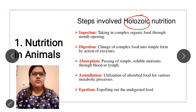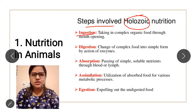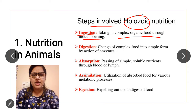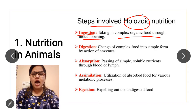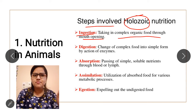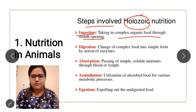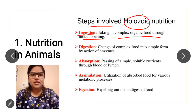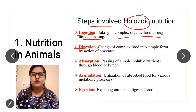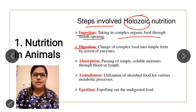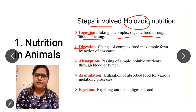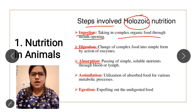The various steps involved in nutrition: first is ingestion — taking in complex organic food through the mouth opening. In the case of amoeba, the mouth is not involved, but in human beings food is taken through the mouth. After taking in food, it is digested into simple form with the help of digestive enzymes. Third step is absorption — the passing of simple soluble nutrients into the blood or lymph.